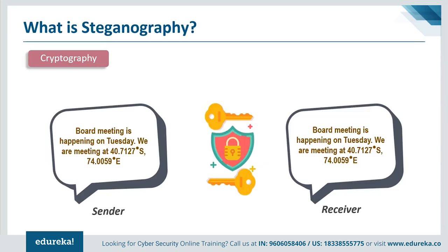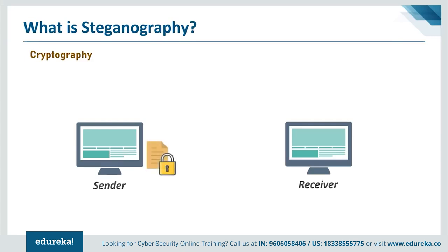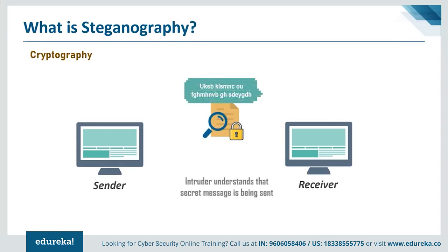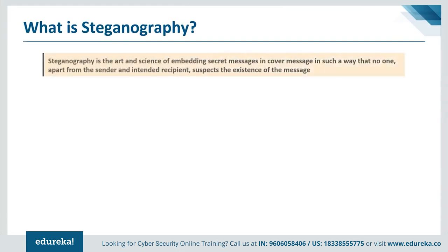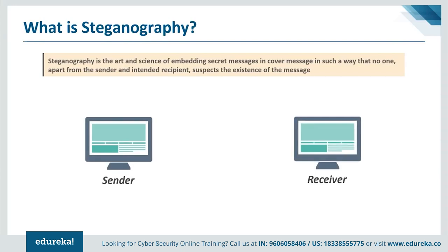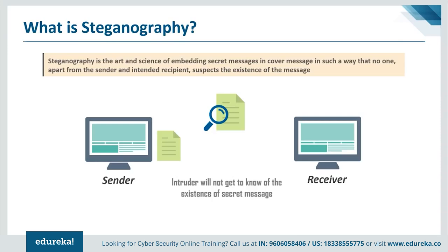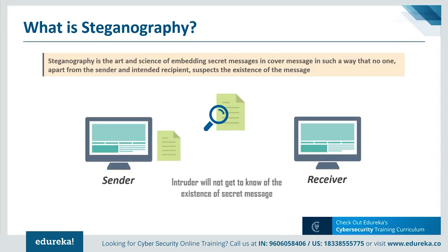If cryptography is a strong way to encrypt and secure communication, then why do we need a new technique? The answer is simple: when using a cryptography technique, we need to send a secret key, and a third person can easily judge that some secret communication is going on. Cryptography does not try to hide the fact that a secret message is being sent. This is where steganography comes in — you hide your secret message behind an ordinary file, so no one suspects any communication is happening. Unlike cryptography, which conceals the content of a message, steganography conceals the very fact that a message is being communicated.